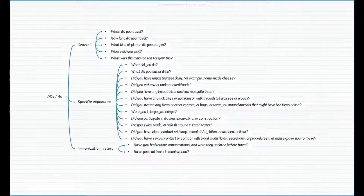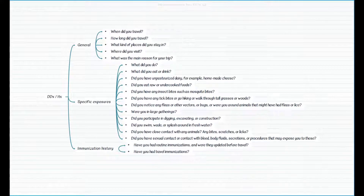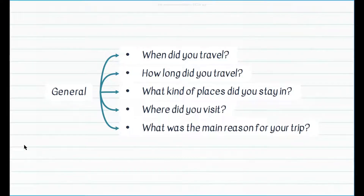This slide summarizes the history-taking questions that come handy when approaching any case or patient with travel-related issues. There are three categories: general history of travel focusing on time and location, specific exposure history, and immunization history. The five general history-taking questions to ask for any case of travel medicine are: When did you travel? How long did you travel? What kind of places did you stay in? Where did you visit? And what was the main reason for your trip? Let's review some differential diagnoses related to these questions.